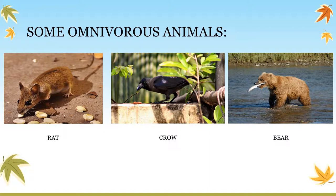The bear can also eat insects sometimes and also eats fish, so it is an example of an omnivore animal. Rats, which we commonly find in our surroundings, mostly feed on grains and other foods, and sometimes leftover meat. Crow eats seeds, grains, fruits, small pieces of meat, and insects. So rat and crow are also examples of omnivore animals.